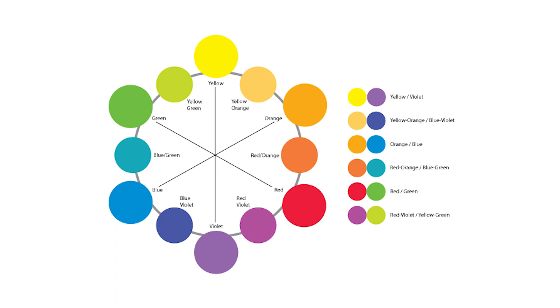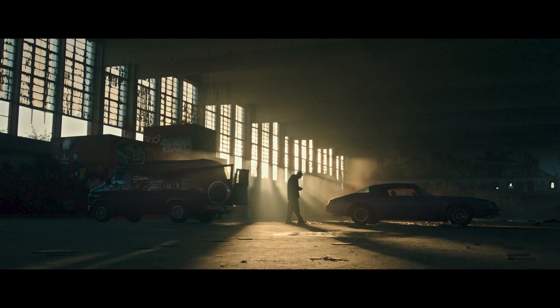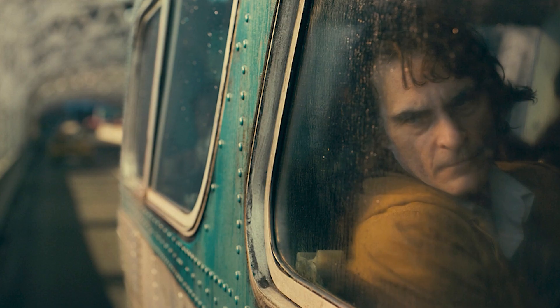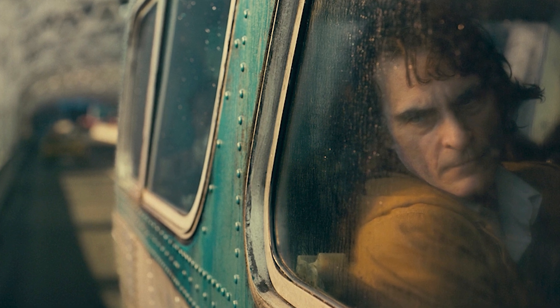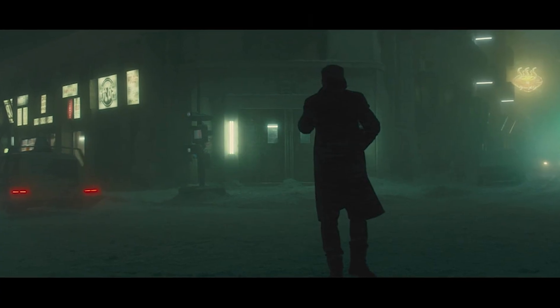For example: blue and orange, violet and yellow, green and red, and so on. These color combinations are made up of one cool color and one warm color. This helps create what is known as simultaneous contrast — an illusion where putting one complementary color next to the other makes both colors appear brighter and ultimately grab your viewer's attention.